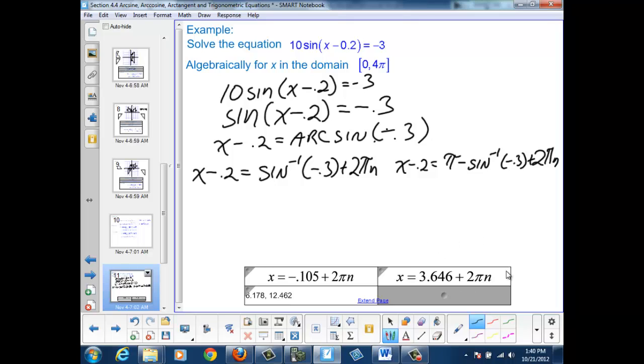On the right side, if I let n = 0, then x = 3.646, which is between 0 and 4π.